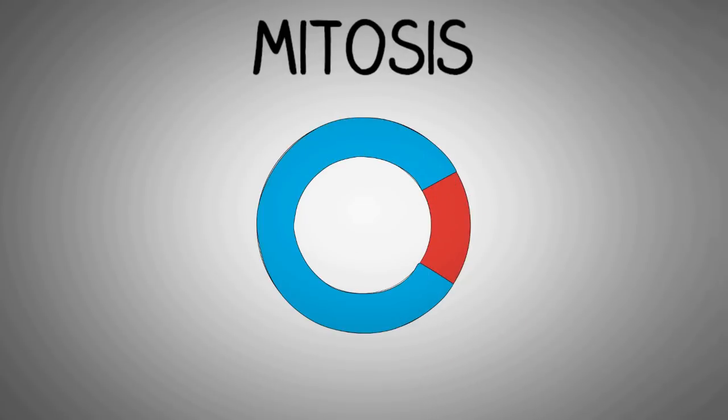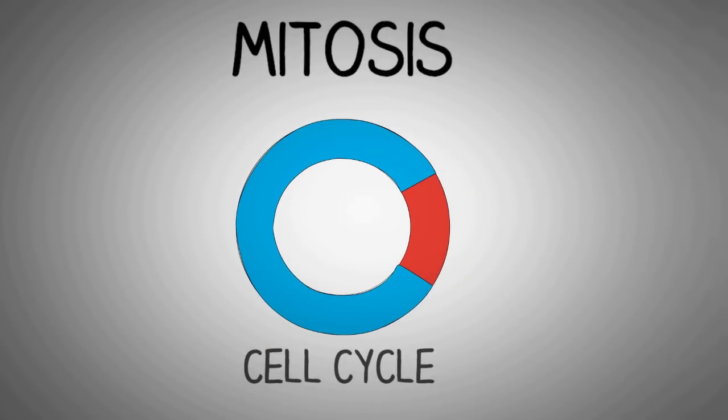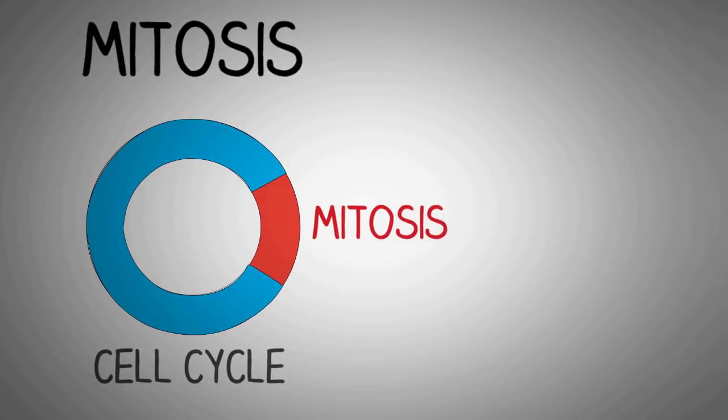In simple terms, mitosis is a small phase in the whole cell cycle in which the nucleus of the cell divides into two.